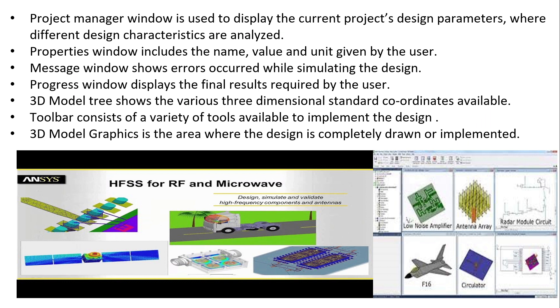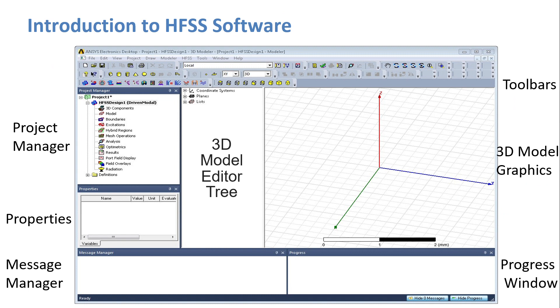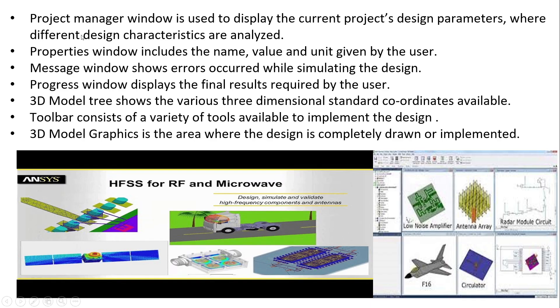When we individually talk about the project manager properties and all the remaining layout, these are the points. The project manager window is used to display the current project's design parameters where different design characteristics are analyzed. Properties window includes the name, value and unit given by the user. Message window shows errors occurred while simulating the design. Progress window displays the final results required by the user. And the 3D model tree shows the various three-dimensional standard coordinates available. Toolbar consists of a variety of tools available to implement the design. 3D model graphics is the area where the design is completely drawn or implemented. So, this right image shows us the various kinds of designs or layouts which we can do in the HFSS software.